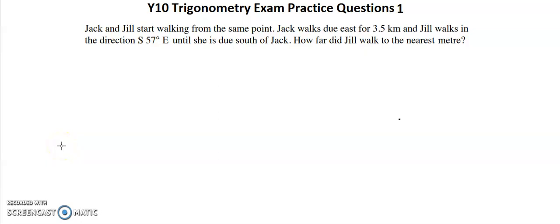Year 10 Trigonometry Exam Practice Question 1. Jack and Jill start walking from the same point. Let's just put that point as over here.